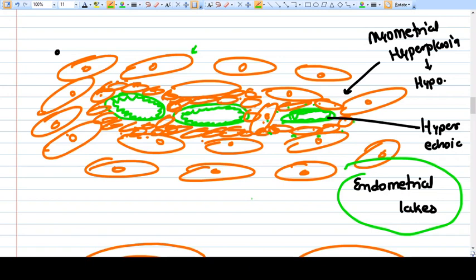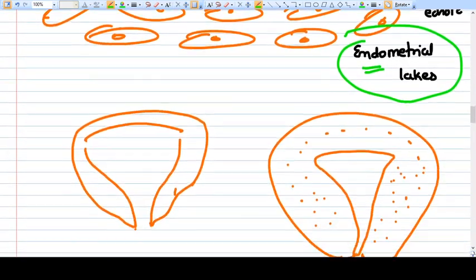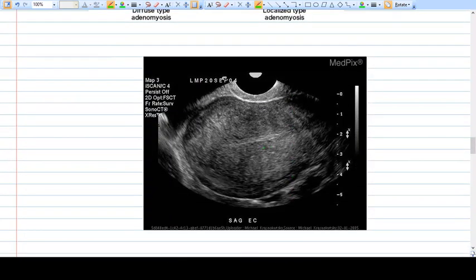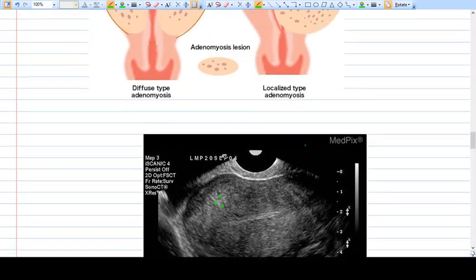That is salt and pepper appearance. How it appears: the endometrial legs will have a hyperechoic appearance on ultrasound, and this myometrial hypertrophy will have a hypoechoic appearance. If you see this ultrasound here, you can see the hyperechoic and hypoechoic areas—the hypoechoic thing is hypertrophy of myoma.